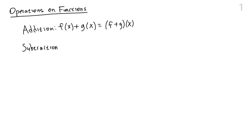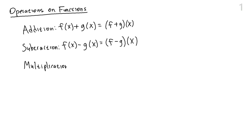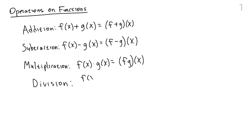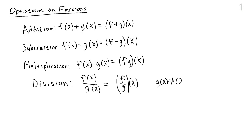We can have subtraction, similarly to addition. If we have one function and we want to subtract from it another function, it has a new name called f minus g, and we apply it to the input x. We also have multiplication of functions — the result is a new function called fg applied to x. Likewise, if we want to divide two functions, we get a new function called f-bar-g applied to x, with the disclaimer that g of x can't be zero. These are the four basic operations on functions.